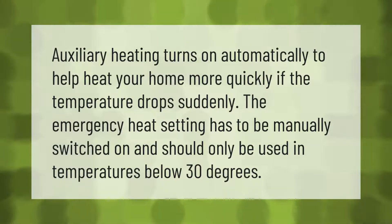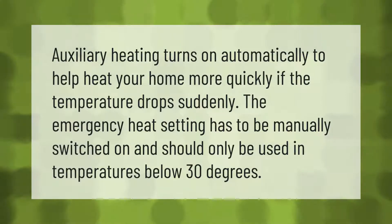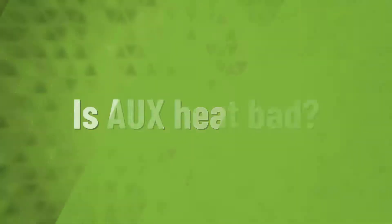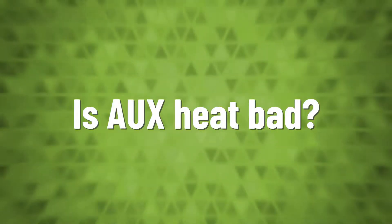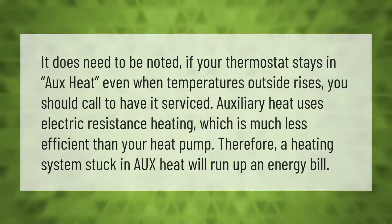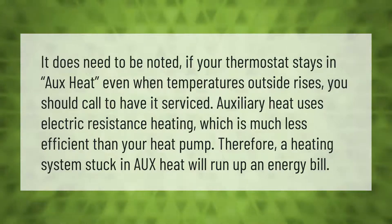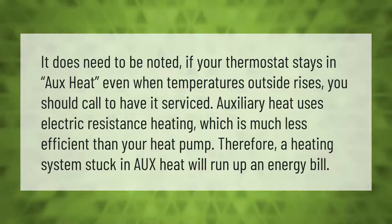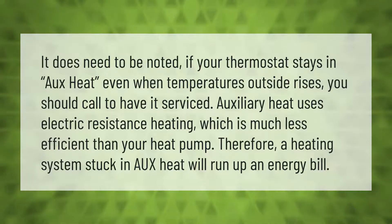Auxiliary heating turns on automatically to help heat your home more quickly if the temperature drops suddenly. The emergency heat setting has to be manually switched on and should only be used in temperatures below 30 degrees. If your thermostat stays in auxiliary heat even when temperatures outside rise, you should call to have it serviced. Auxiliary heat uses electric resistance heating, which is much less efficient than your heat pump, and a heating system stuck in aux heat will run up an energy bill.